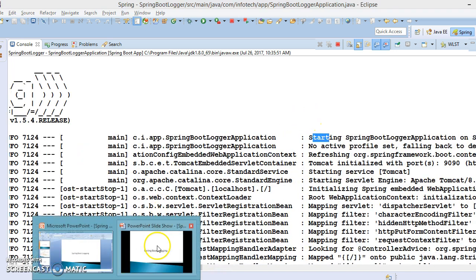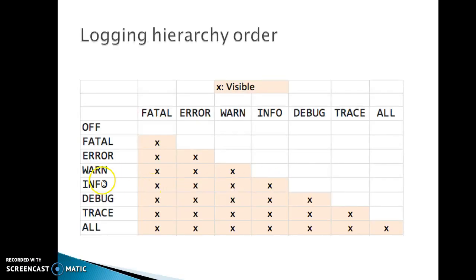If your default logging level is set to INFO, then log messages for FATAL, ERROR, WARN, and INFO get printed. There are different logging levels. OFF is the highest possible rank and is intended to turn off logging entirely. FATAL designates very severe error events that will presumably lead the application to abort — after this, mostly your application crashes or stops.